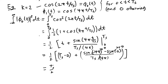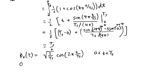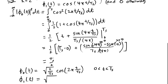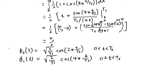To make these waveforms form an orthonormal basis, we need to normalize by the inverse of the energy. So phi_0 becomes sqrt(2/T_s) · cos(2πt/T_s) for 0 ≤ t ≤ T_s, and phi_1 becomes sqrt(2/T_s) · cos(4πt/T_s) for 0 ≤ t ≤ T_s. The normalization factor is the same regardless of the frequency. Now let's restart the problem using these as our orthonormal basis.